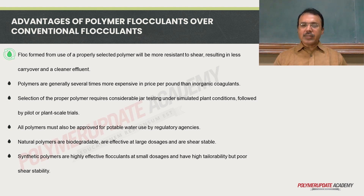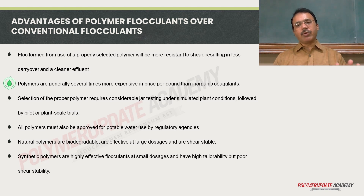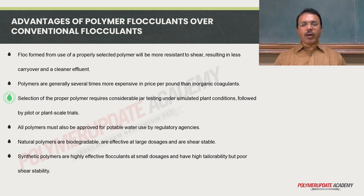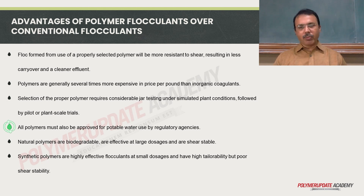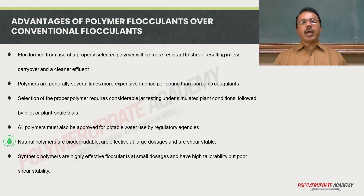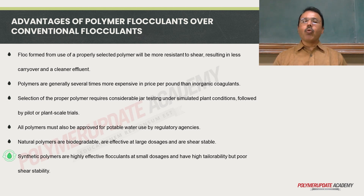Flocs formed by properly selected polymers are more resistant to shear, resulting in less carryover and a cleaner effluent. Polymers are generally several times more expensive per kilogram than inorganic coagulants. Selection of the proper polymer requires considerable jar testing under simulated plant conditions, followed by pilot or plant scale trials. Also, these polymers must be approved by regulatory agencies for use in potable water. Some natural polymers are biodegradable, effective at large dosage, and shear stable. Synthetic polymers are highly effective flocculants at some dosage and have high tailorability but poor shear stability.